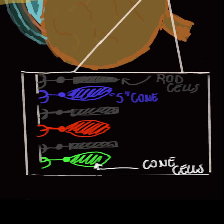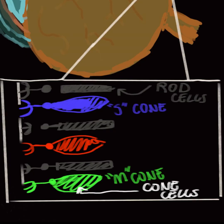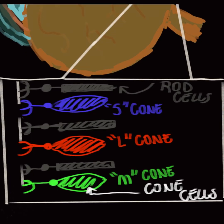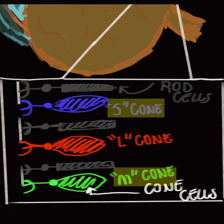Cones are specialized cells, and there are only three types specialized for red, green, and blue. S cones have a sensitivity at around 420 nm, which is blue light. M cones at around 530 nm, which is green light. And L cones at around 560 nm, which is red light.